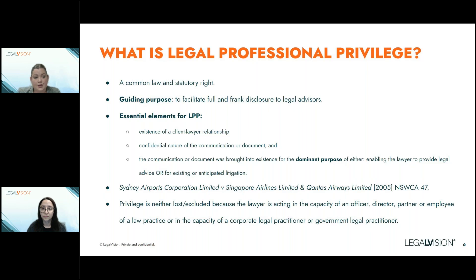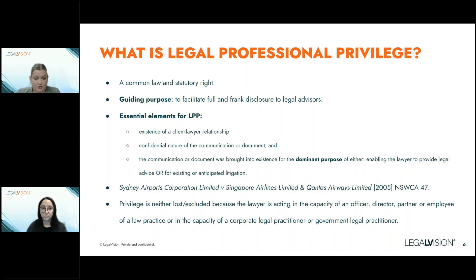To establish a claim for LPP, the purpose of the document needs to be for the dominant purpose of provision of legal advice, and it has to be very clear that there's a lawyer-client relationship and an element of confidentiality. Similarly with litigation privilege, litigation needs to be pending or in contemplation — it needs to be likely or reasonably probable. You can't just provide advice on the off-chance that you might get sued one day. The burden of proving that something is protected by LPP rests with the party claiming that privilege, so you need to be able to satisfy those three key elements.